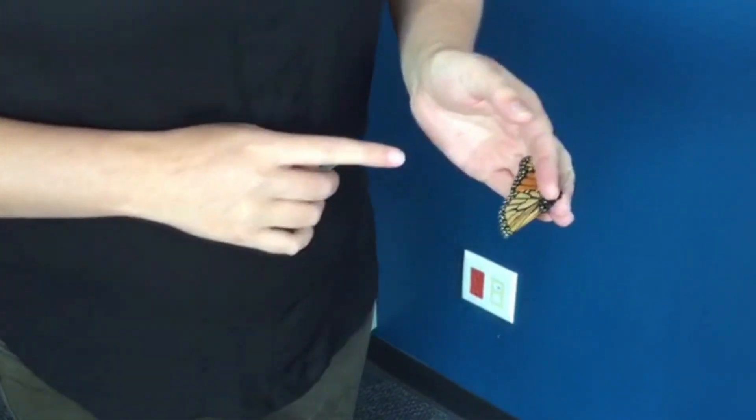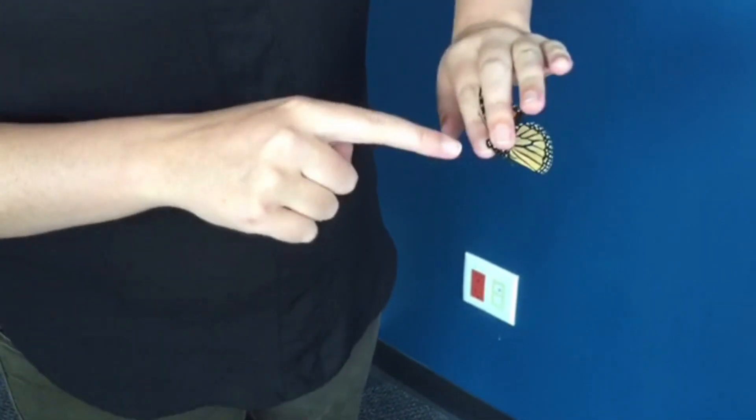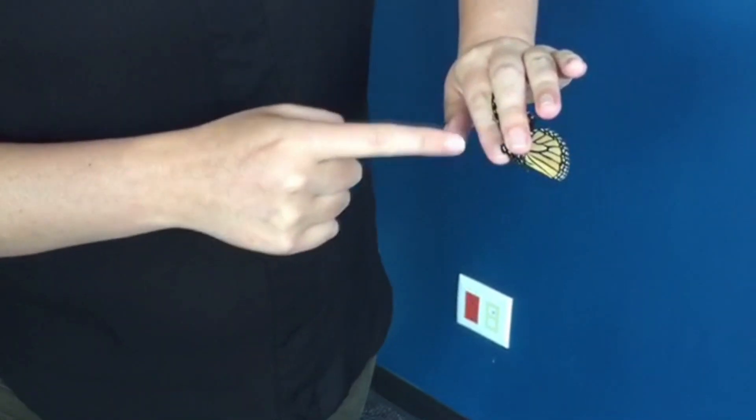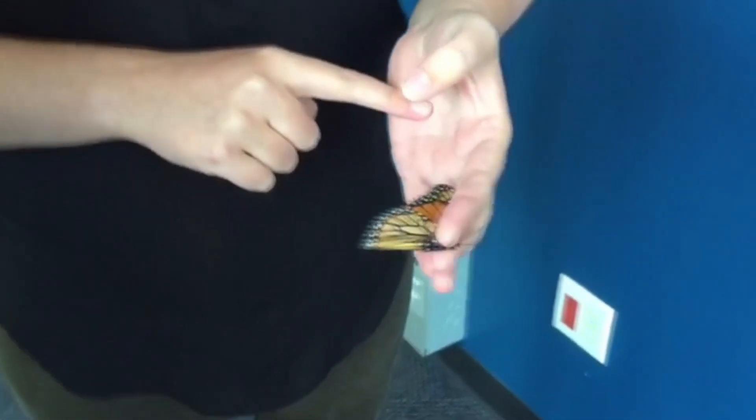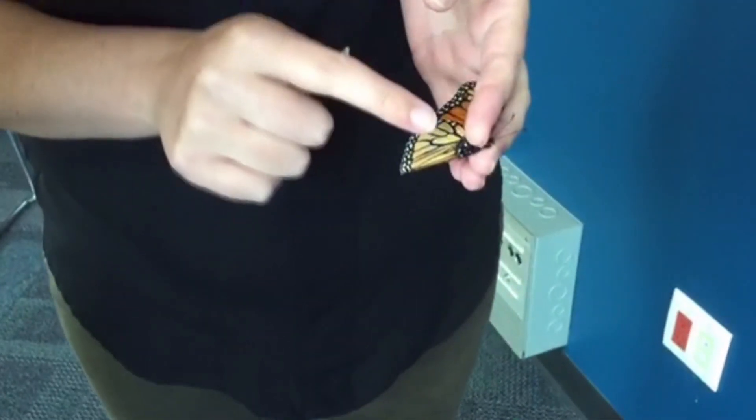Okay, so we have our monarch here. You can see I'm pinching it very gently with my fingers around the head so that I'm minimizing contact with the wings, and what you're looking for